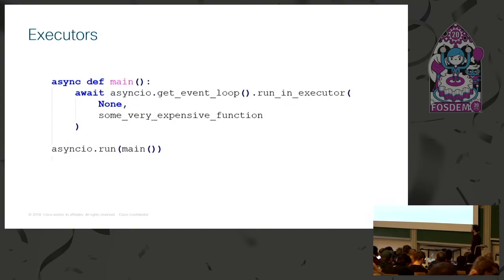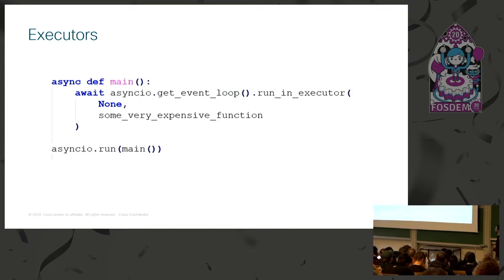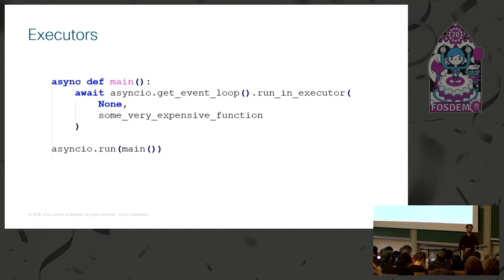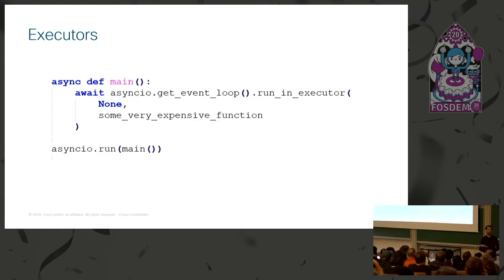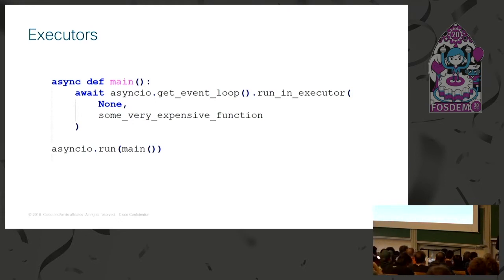Executors are also good to know about. You use them whenever you have to run traditional blocking code — either a blocking IO library like requests, or very CPU-intensive code that would block the event loop. In that case you can run it in another thread or process using an executor, and the main event loop continues responding to incoming connections. The await keyword can still be used to wait for the outcome of that code.